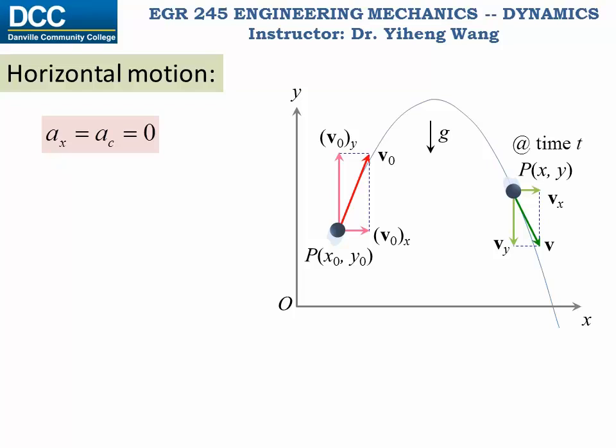So for the horizontal motion with acceleration of 0, the new horizontal position is determined by the initial horizontal position x0 plus the initial horizontal velocity v0x times t. And the horizontal velocity remains unchanged, v0x.